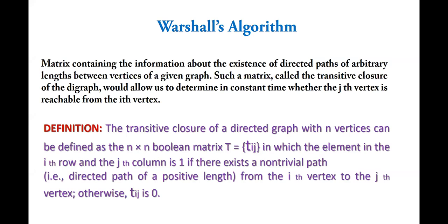As per the standard definition, the transitive closure of a directed graph with n vertices can be defined as the n×n boolean matrix T, in which the element in the i-th row and j-th column is 1 if there exists a non-trivial directed path from vertex i to vertex j; otherwise it is 0.